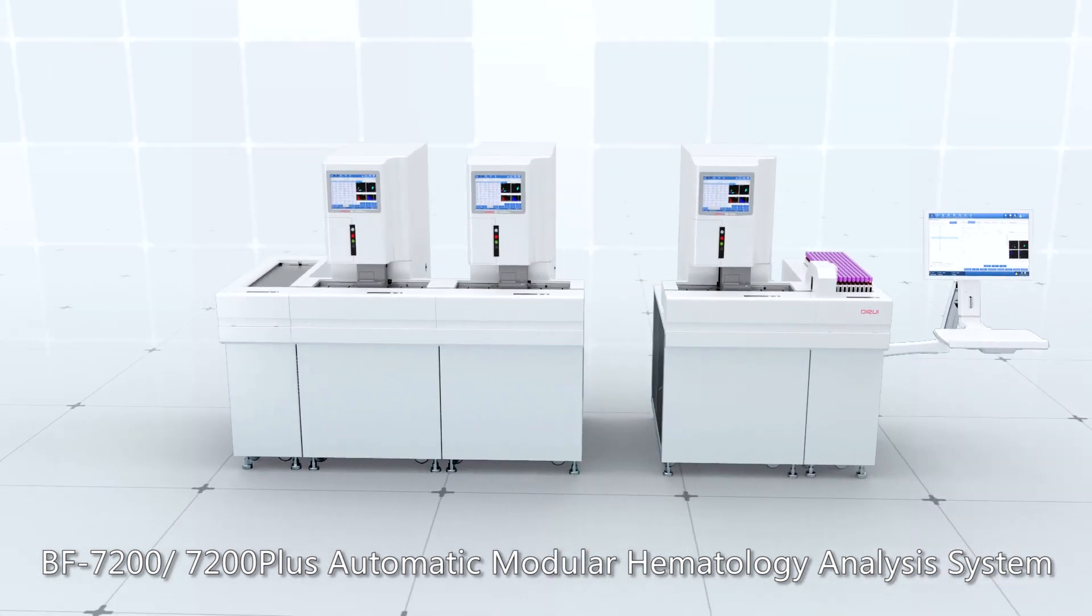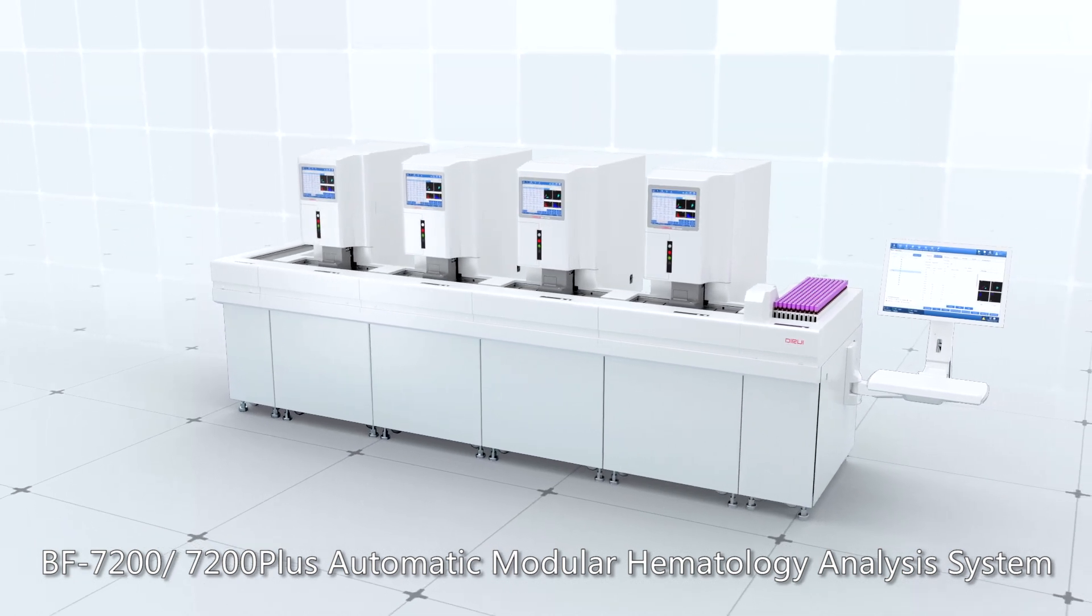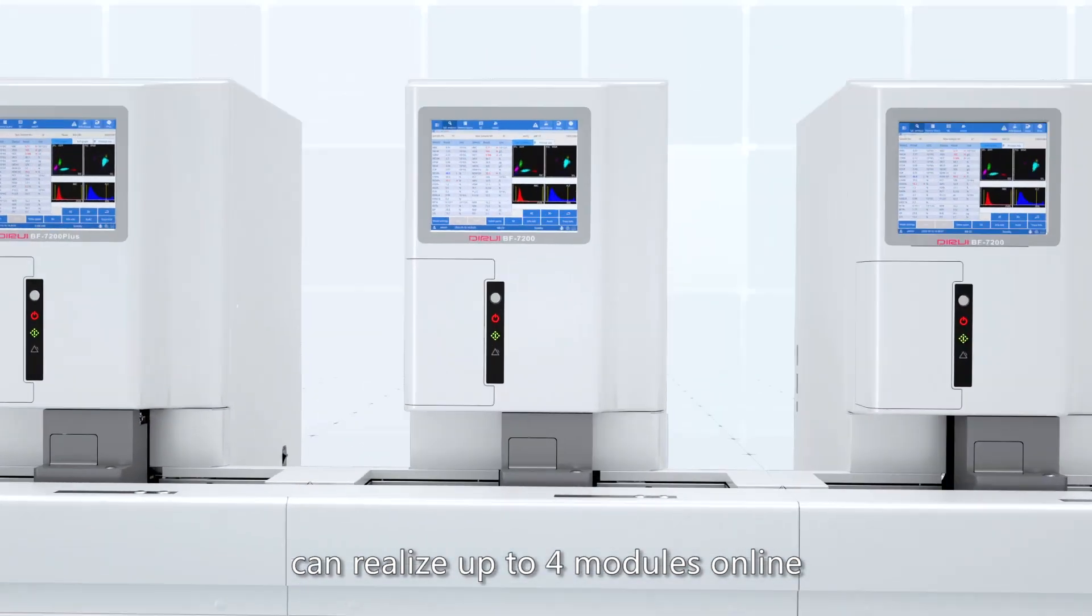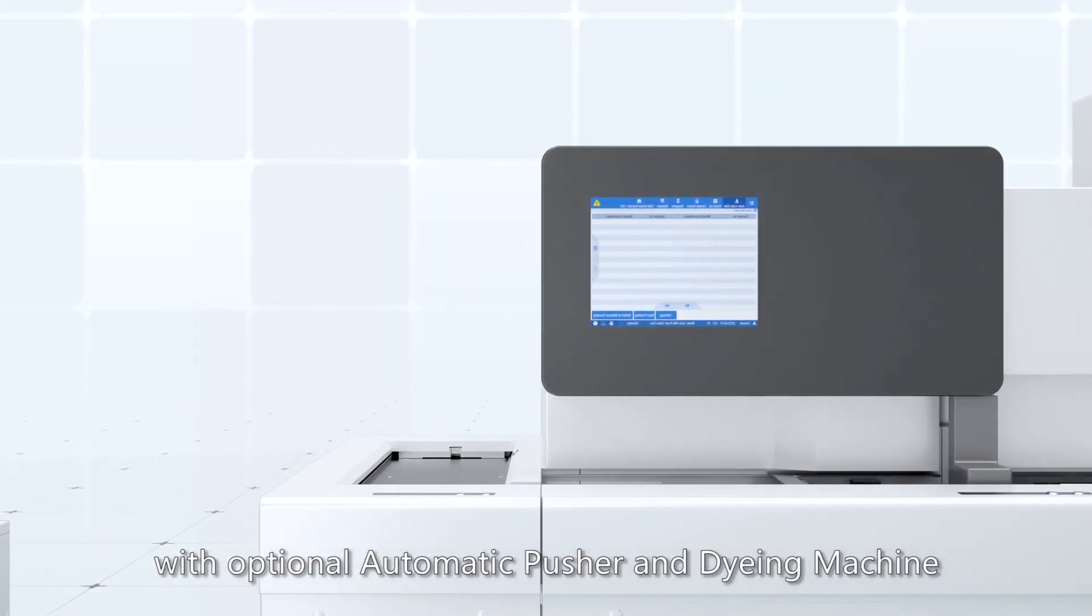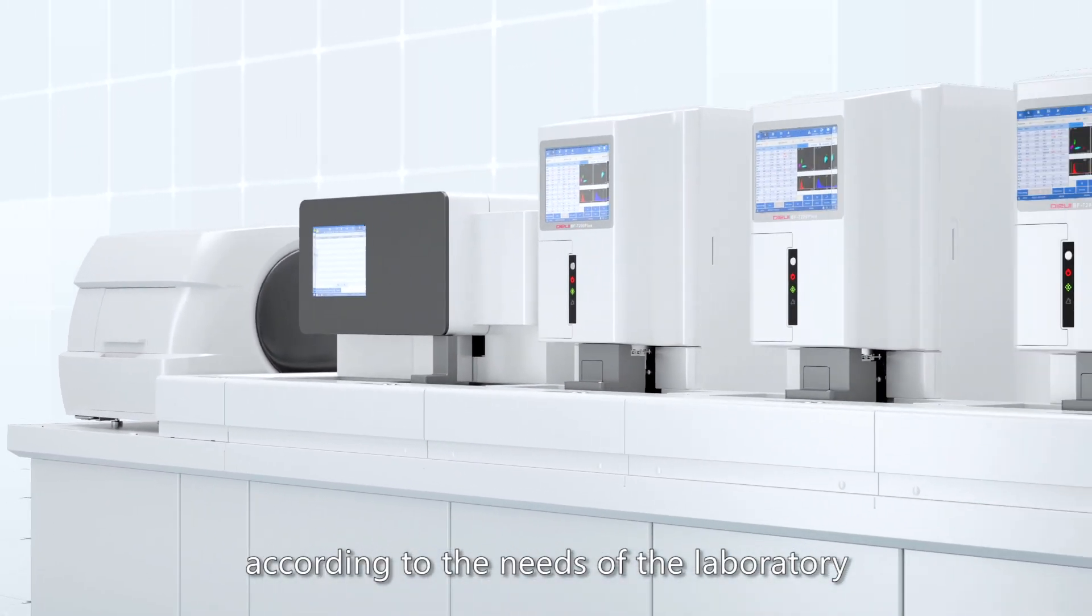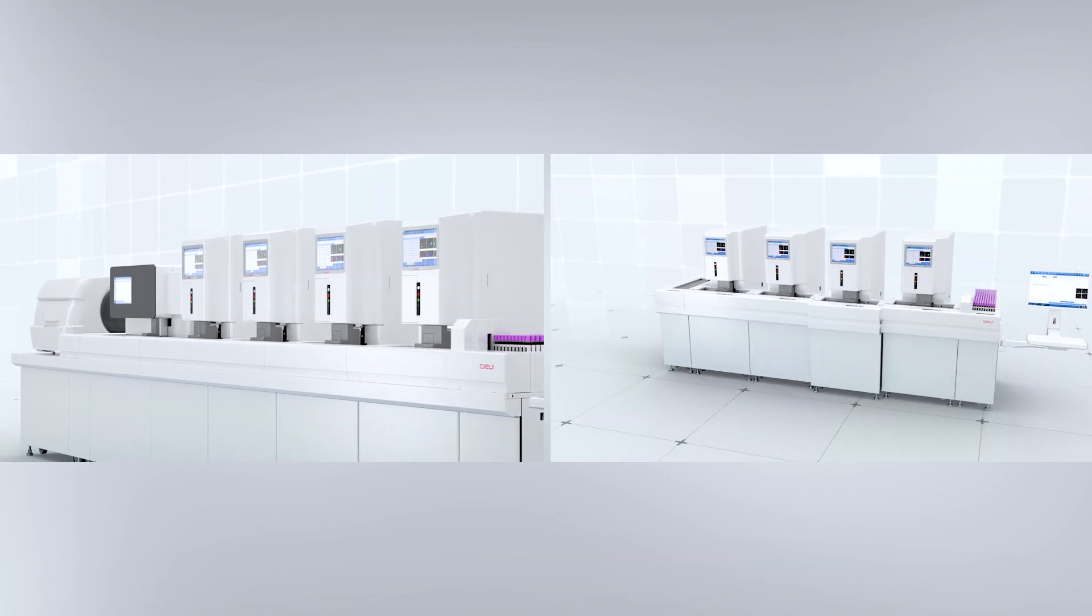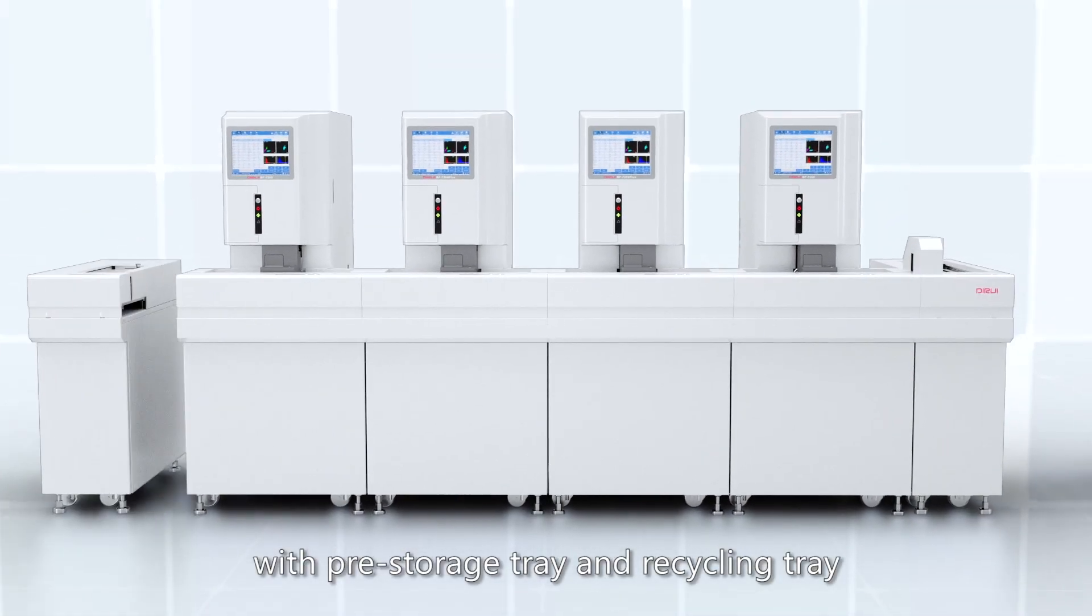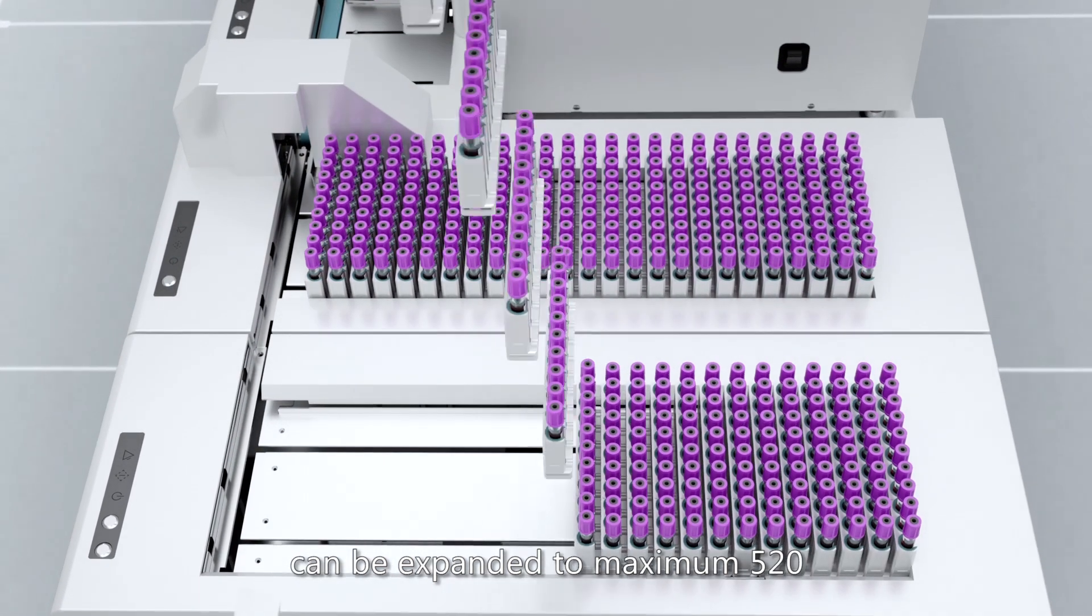BF7200, 7200 Plus Automatic Modular Hematology Analysis System can realize up to four modules online with optional automatic pusher and dyeing machine through flexible configuration according to the needs of the laboratory. With pre-storage tray and recycling tray, the sample position number can be expanded to maximum 520, making batch testing much easier.